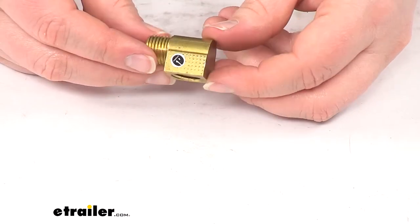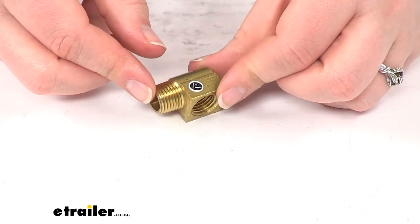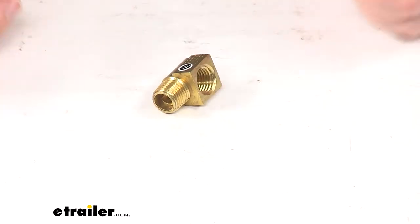That's going to do it for our look at the replacement brass bar street elbow for Fisher snow plow.